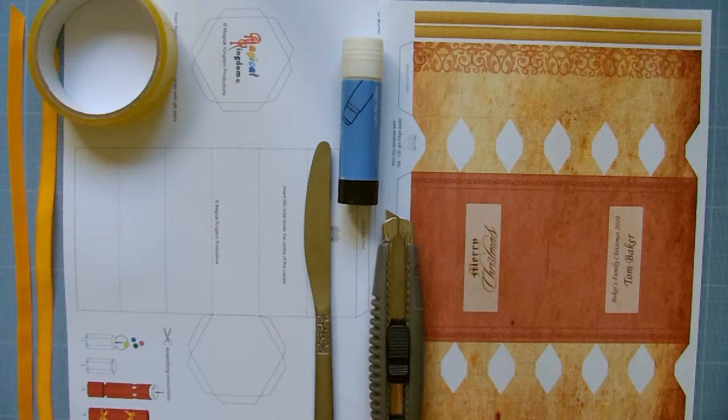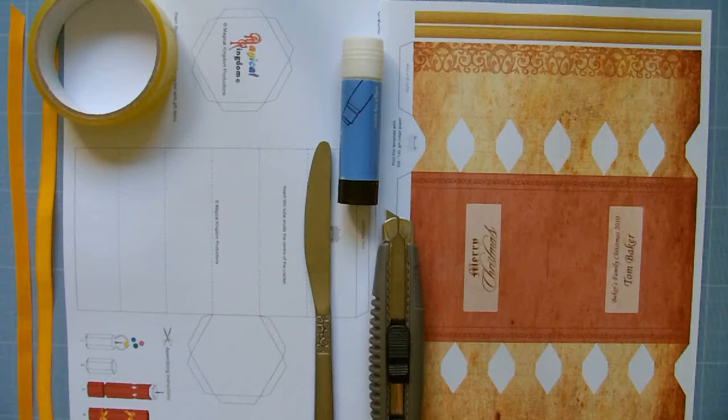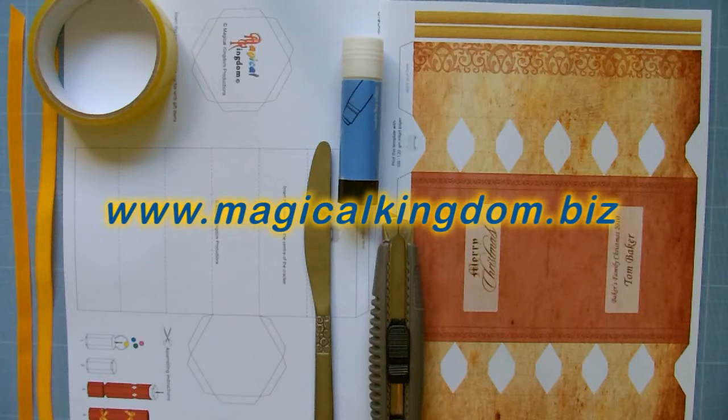For this project, you will need a cutting mat, a craft knife, a steel ruler, a blunt knife, a stick of glue, a roll of cello tape, two strips of thin ribbon, and most importantly, you can personalize and print out the templates at MagicalKingdom.biz.